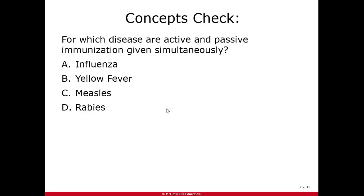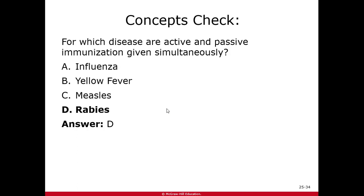Concept check: rabies is the disease where both active immunization (vaccine) and passive immunization (antibodies at the bite site) are given simultaneously post-exposure, because the virus replicates slowly enough for the immune response to be effective.